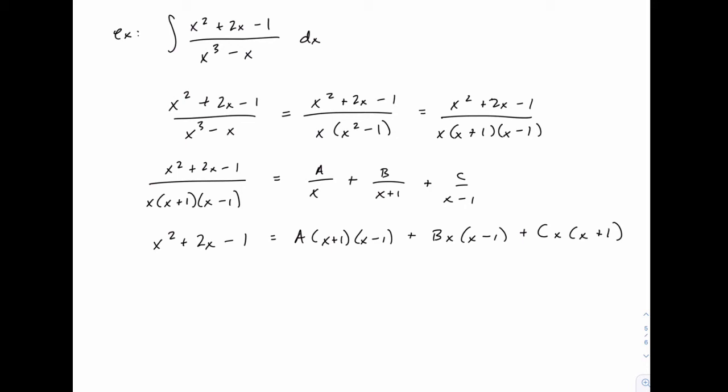You could solve this by expanding out the right-hand side and equating all of the x squared terms on the right with the 1 x squared on the left, all of the x terms on the right with the 2x on the left, and all of the constants on the right with negative 1. From that system of three equations, you could solve for A, B, and C.